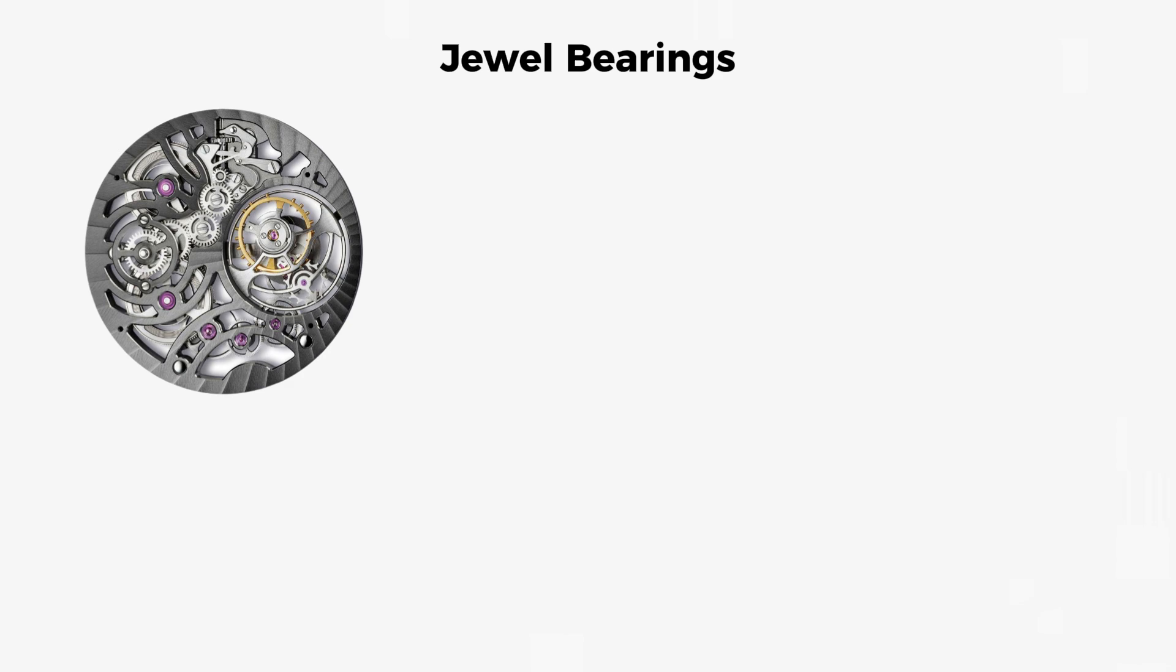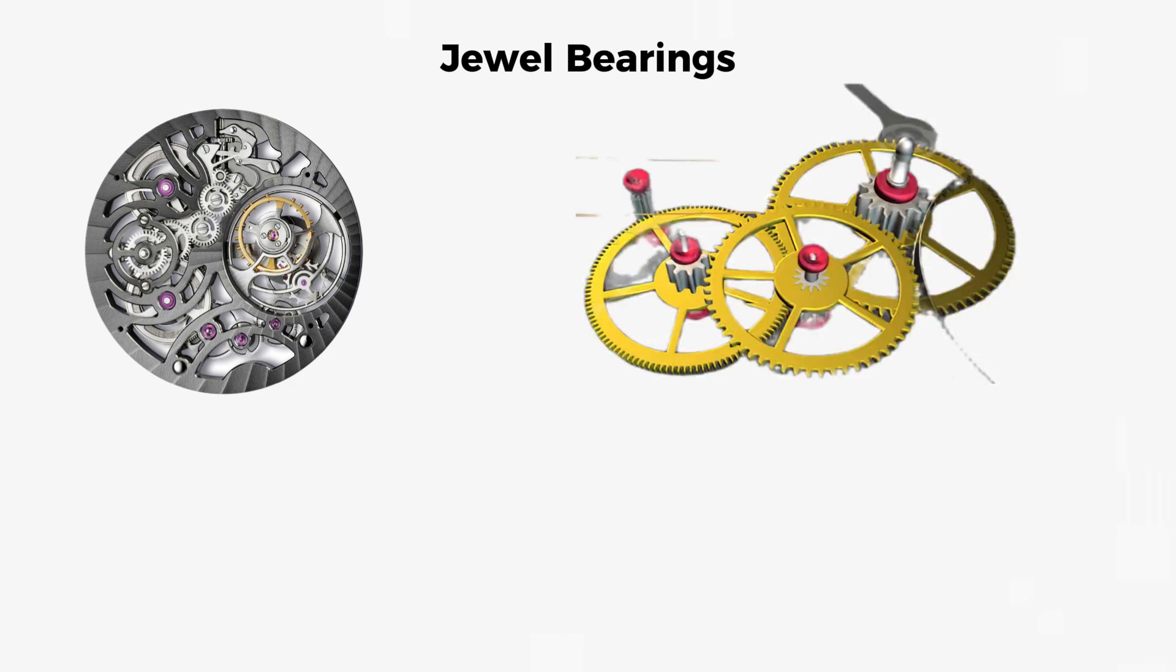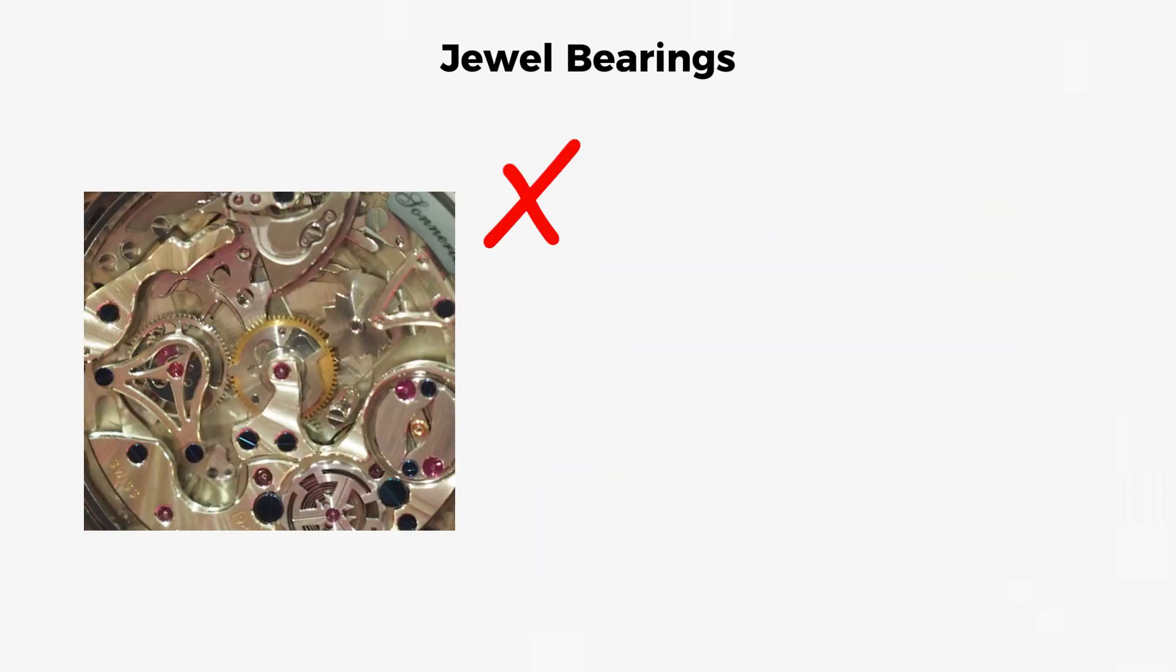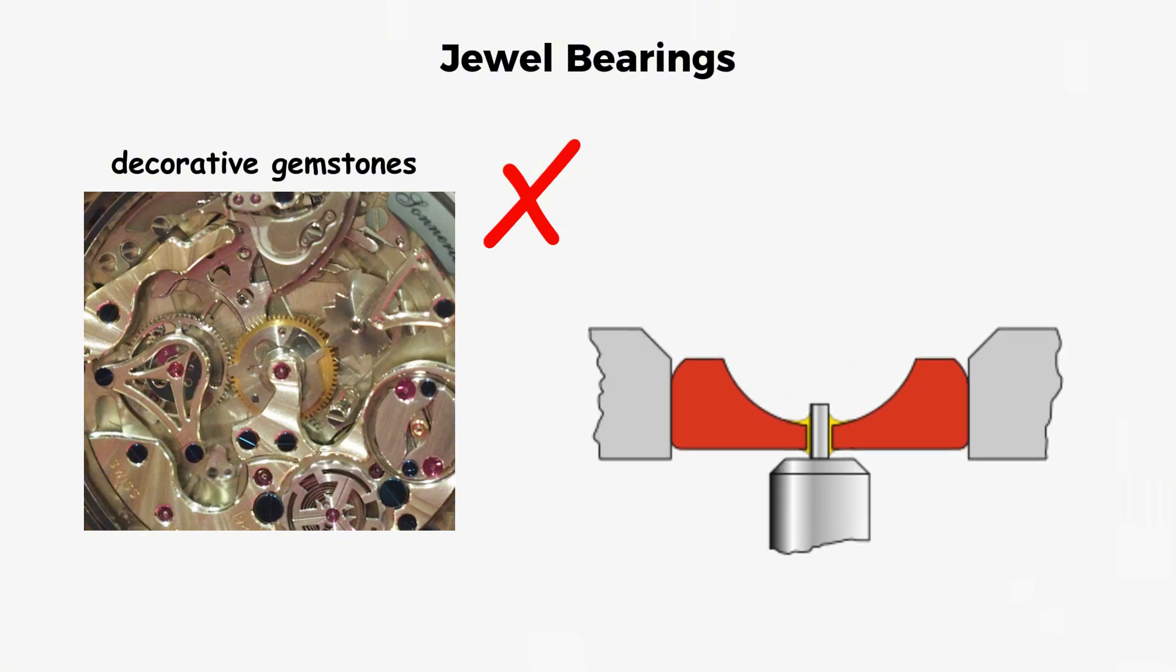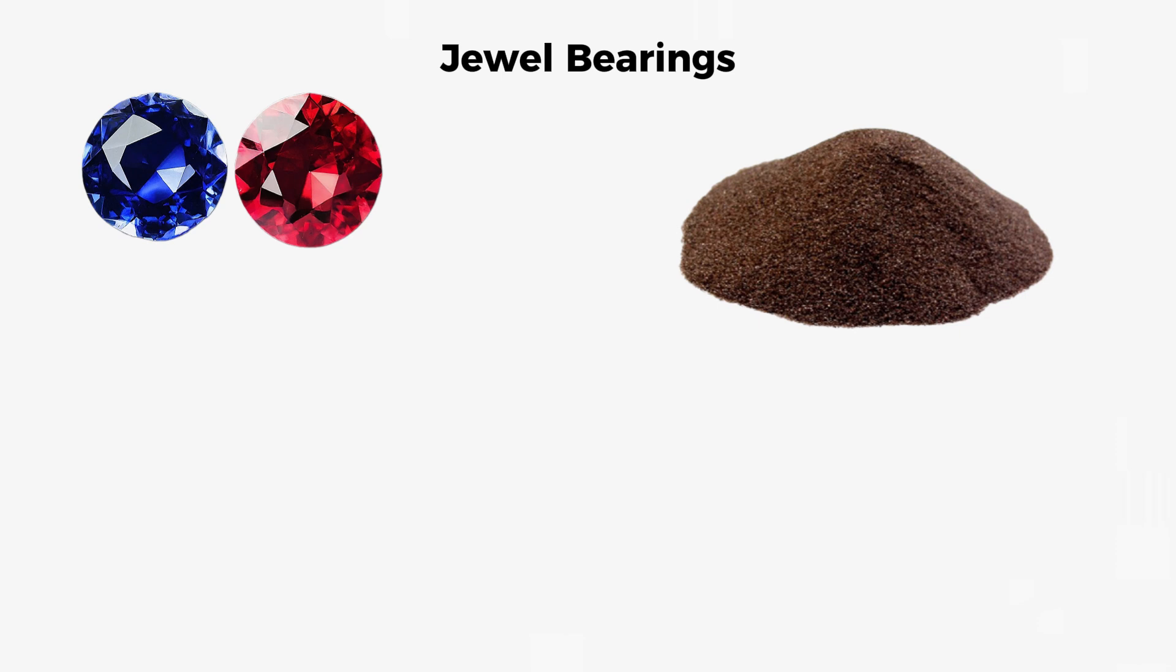Jewel bearings. The axle of each wheel in the train rests inside a synthetic jewel bearing. These are not decorative gemstones, they are functional components made from lab-grown ruby or sapphire, specifically aluminum oxide with a hardness rating of 9 on the Mohs scale. Only diamond is harder.